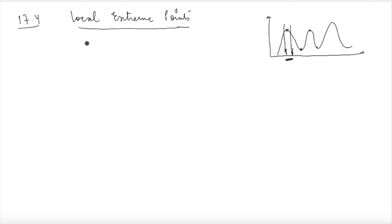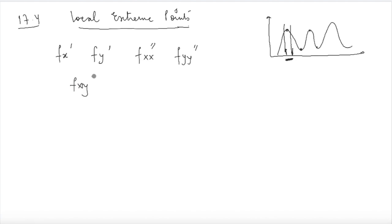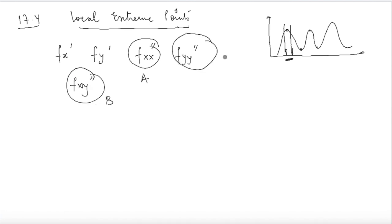Now, let's quickly go through the conditions for finding out local extreme points. Suppose you are given a function f(x, y). The first thing you need to do is to find out all the partial derivatives. So you will find fx', fy', fxx', fyy', and fxy'. The first step to solve any question on this topic is to find out the partial derivatives — first and second order. We are calling fxx' as a, fxy' as b, and fyy' as c.